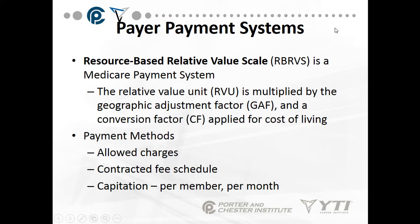Payer payment systems include the Resource-Based Relative Value Scale, or RBRVS — a Medicare payment system. For example, in the Denver, Colorado region, the RBRVS might determine Medicare will pay $122 for a routine physical exam. That unit is multiplied by a geographic adjustment factor and a conversion factor applied for cost of living to determine the payment value, which differs from region to region.